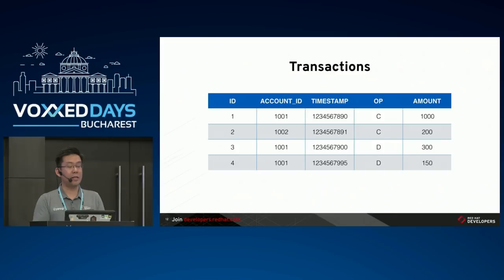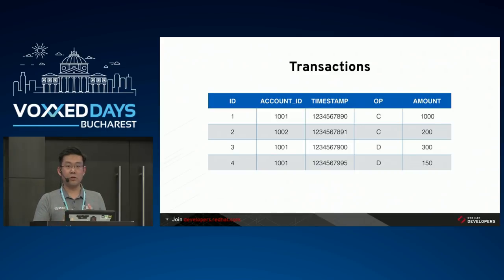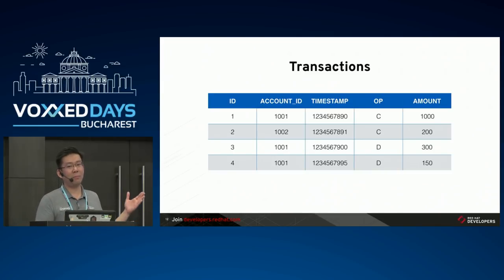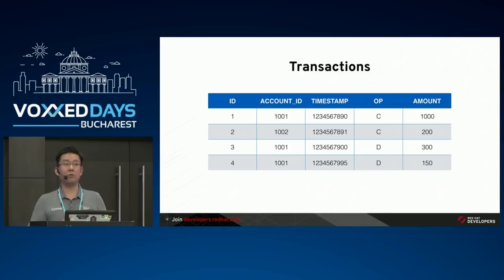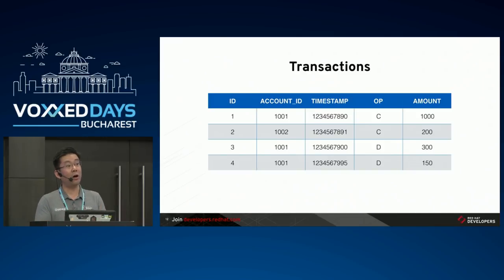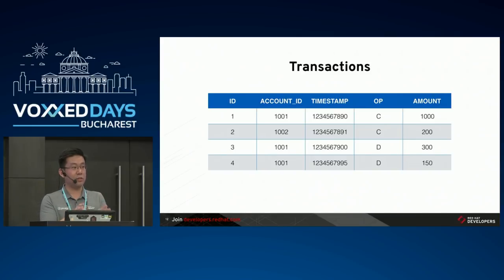Event sourcing is a very nice architecture because you have very fast writes. If you need high throughput on writes, you would typically model with event sourcing. Event sourcing also gives you easy auditing - if you want to know whether the amount you're seeing is correct, you just start from zero and reapply all the transactions. You also have a free time machine: I want to know how much money I had one year ago at 3pm on the last Friday of March - you start from zero and apply all transactions until exactly that timestamp. These are some of the advantages of using an event sourced system.